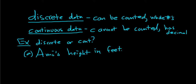So Amy's height in feet, this could be a decimal, right? It's possible Amy could be 4.2 feet high, right? So this is continuous.